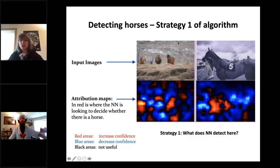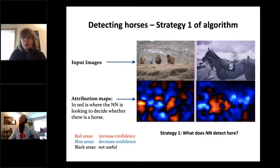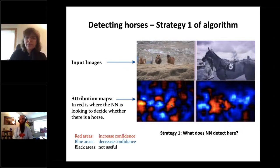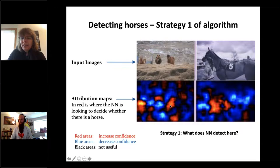They fed input images into the neural network. The analysis algorithm looked at when the neural network decided there was a horse, and examined where it was paying attention in the input image. This gives an attribution map for each image, where red areas represent increased confidence that there is a horse, blue areas decreased confidence, and black areas are not deemed useful. For these examples, the attribution aligns with the body parts of the horses — which is an excellent strategy.